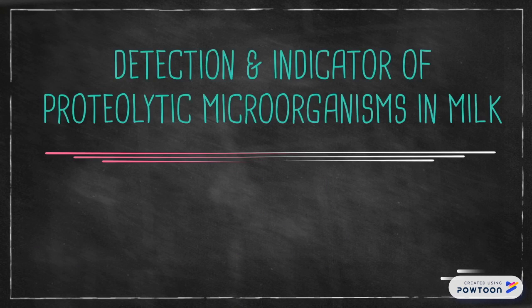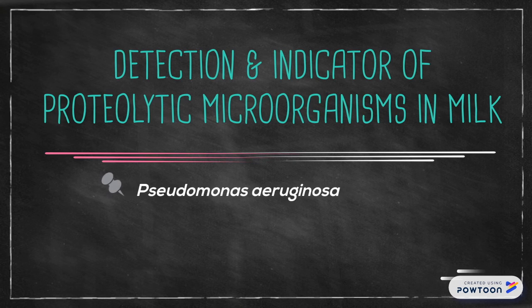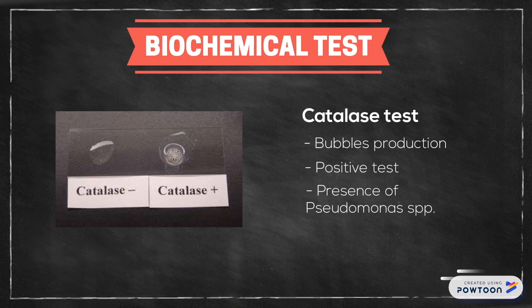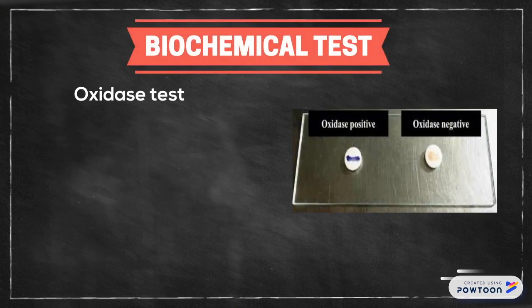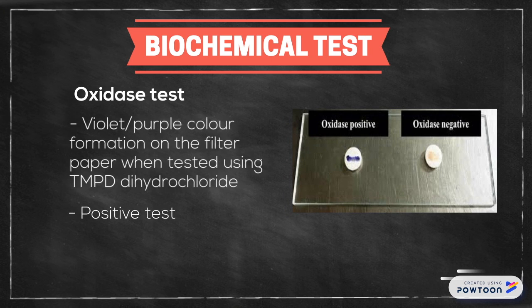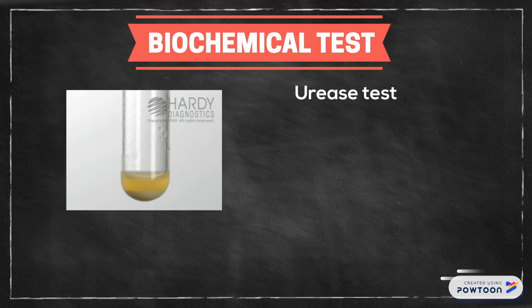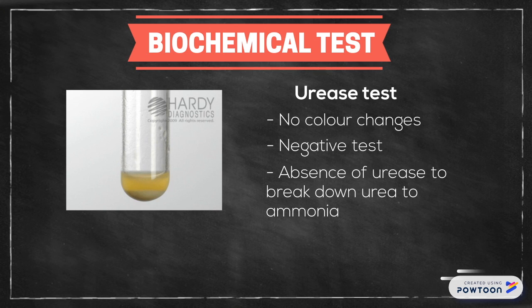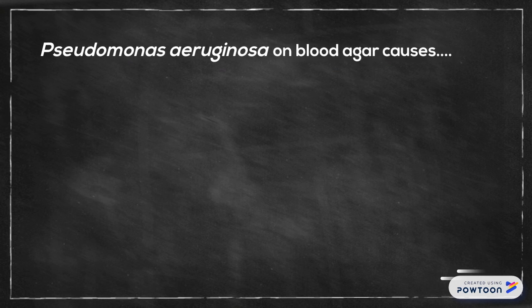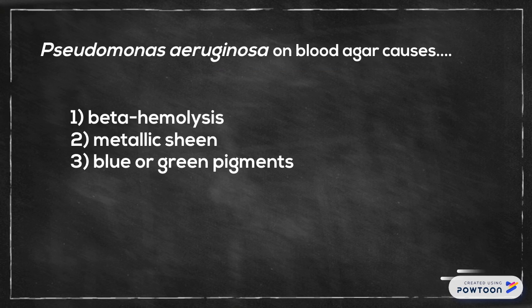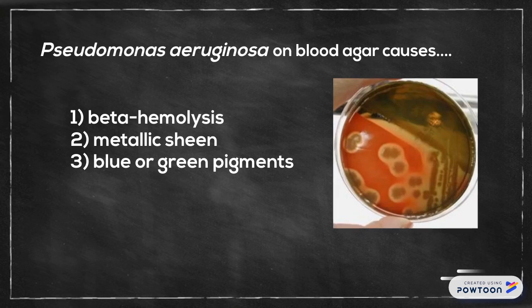Several biochemical tests can be done to detect proteolytic microorganisms such as Pseudomonas aeruginosa, Pseudomonas fluorescens, and Pseudomonas putrefaciens. The first is the catalase test: the presence of Pseudomonas species is indicated by a positive result as bubbles are produced. The oxidase test gives a violet or purple color formation on filter paper when tested using TMPD dihydrochloride, again indicating Pseudomonas species. However, negative results are obtained in the urease test, as Pseudomonas species do not have urease to break down urea into ammonia. Culturing Pseudomonas aeruginosa on blood agar will show beta hemolysis, metallic sheen, and blue or green pigments.